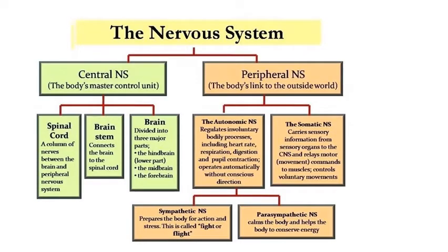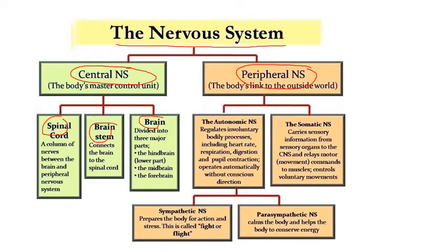So the nervous system is divided into the central nervous system — made up of the spinal cord, brain stem, and brain — and then the peripheral nervous system. The peripheral nervous system is divided into two parts. The somatic nervous system is what we looked at at GCSE: sensory organs like the eyes connected through the central nervous system to effectors like the muscles. What we're more interested in in this unit is the autonomic nervous system, sometimes described as automatic, which is going to control heart rate and breathing rate.